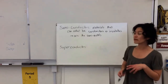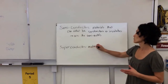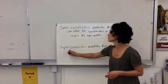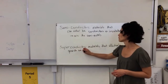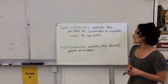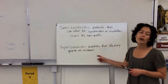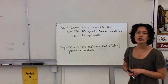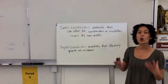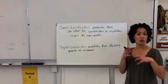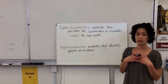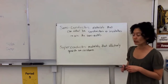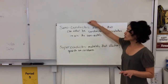Superconductors are materials that effectively provide no resistance. Right now we don't have materials that behave like a superconductor at room temperature or any temperature you'd normally interact with. Usually to have a superconductor you have to get extremely cold — the colder the material, the less the atoms jostle around, reducing resistance and allowing electrons to move freely. That's just another category of material; we won't go into more depth on superconductors.